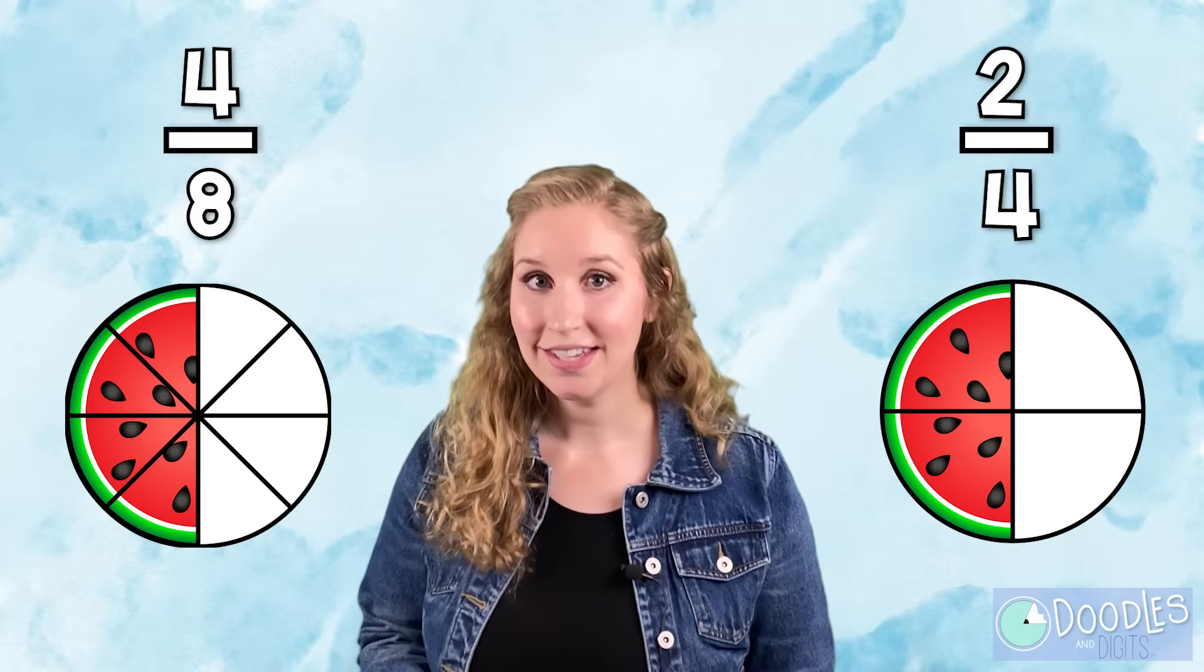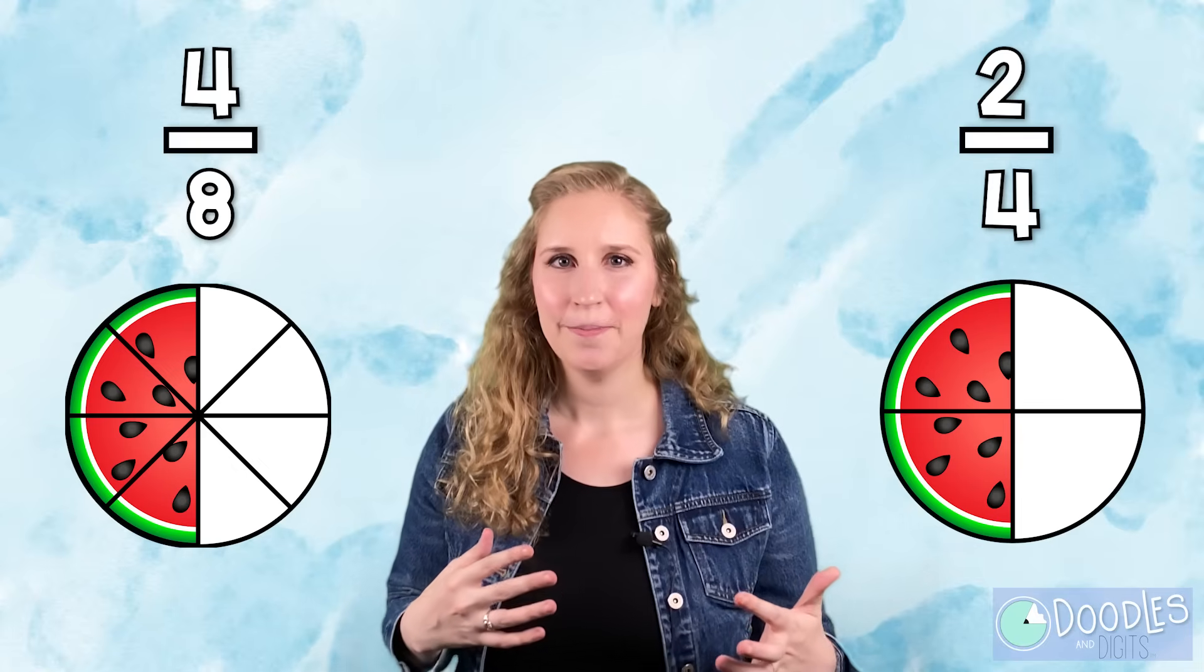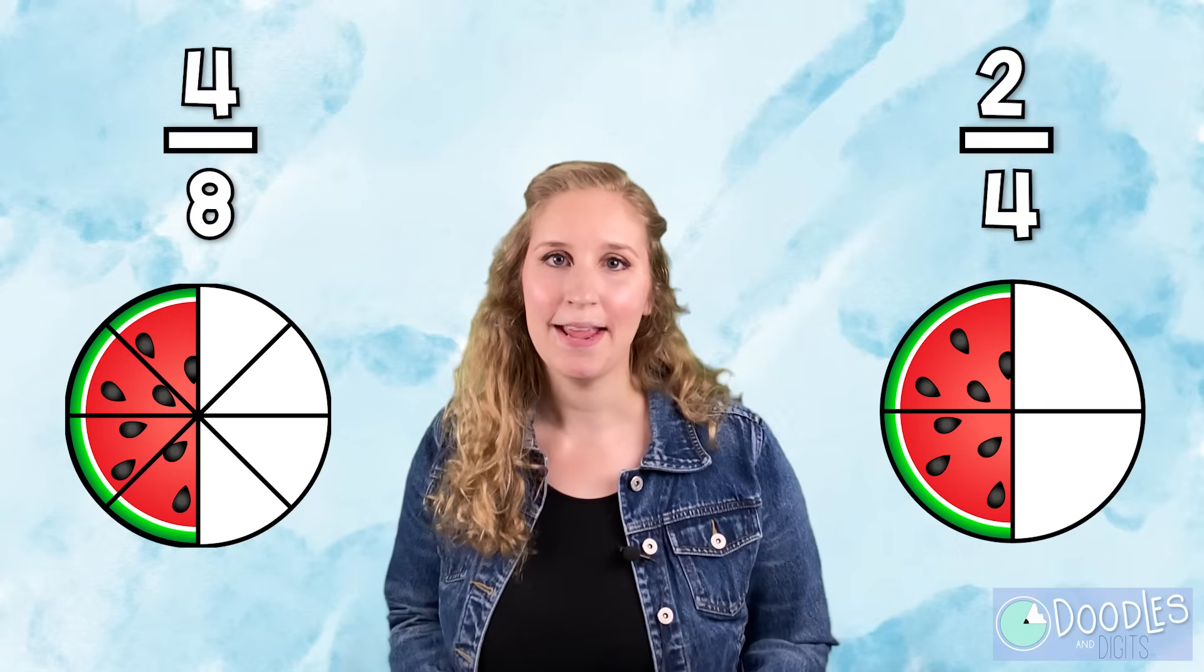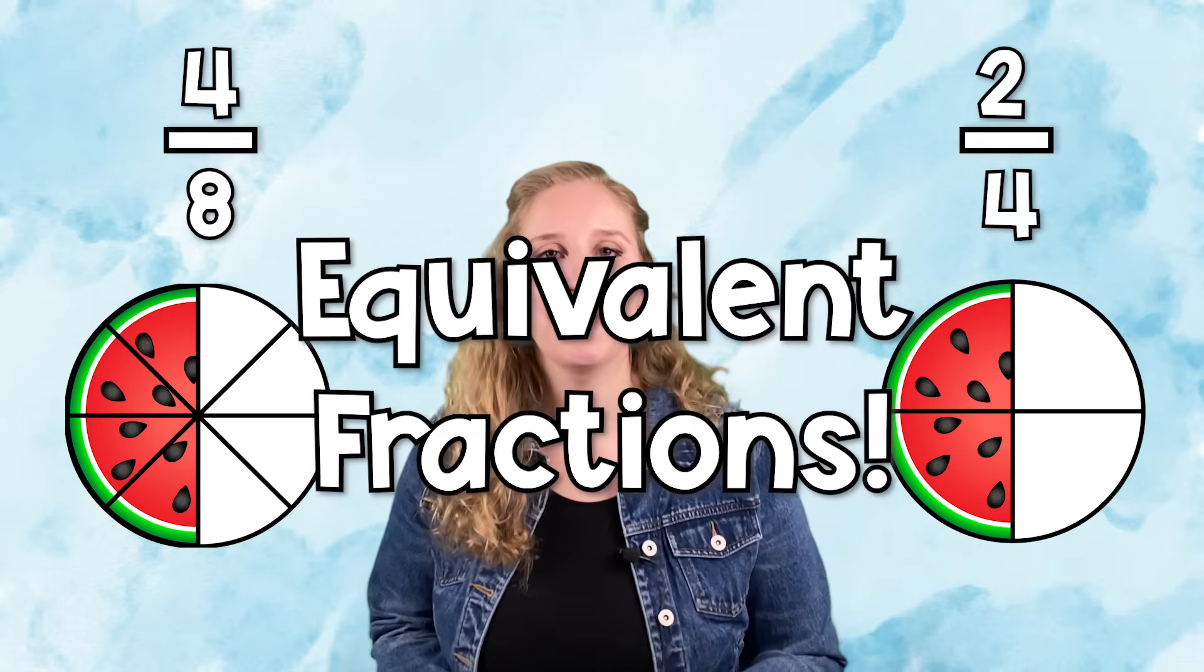Something is similar and something is different. What you might notice is that the numerators are all different and the denominators are all different, but they're actually equal to the same thing. Those are called equivalent fractions and that's what we're going to get into today.